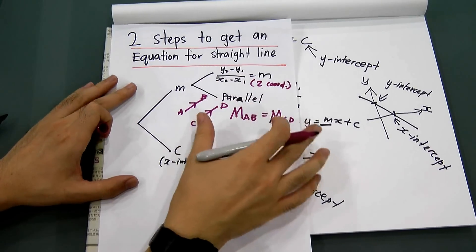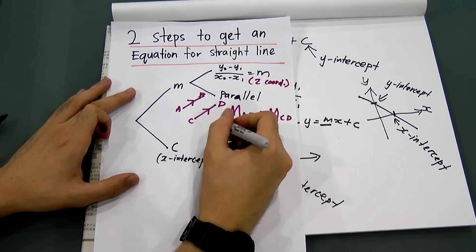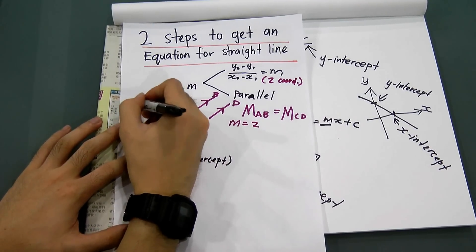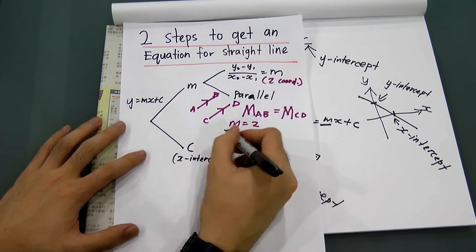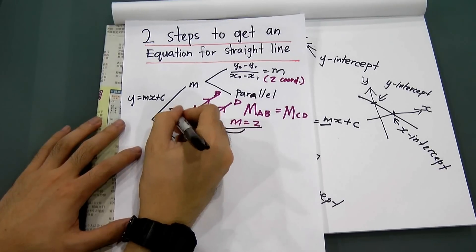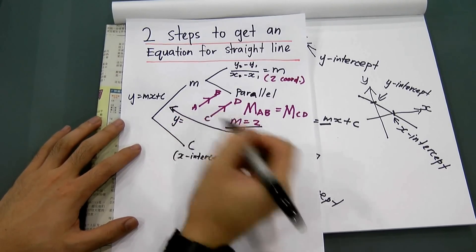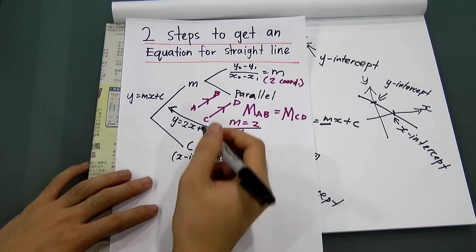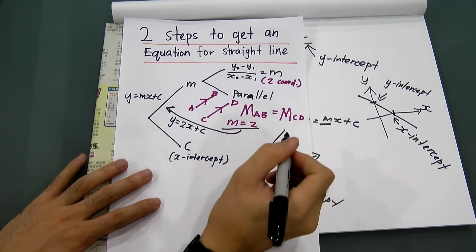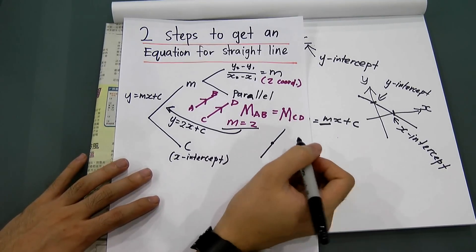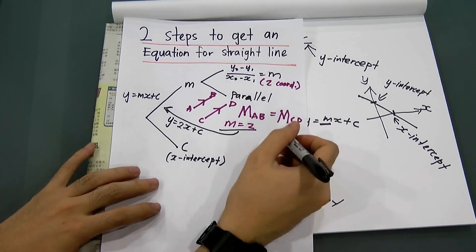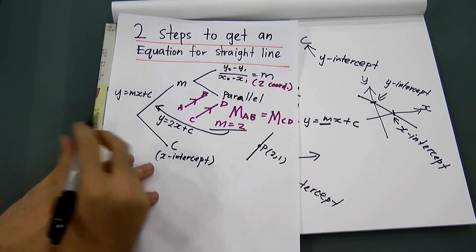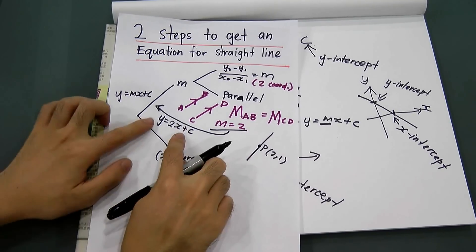After finding the gradient, let's say m equals two. You substitute it back into the equation y equal to mx plus c, giving you y equal to 2x plus c. To find c, you must have at least one coordinate that lies on the straight line. Let's say you are given point P at coordinates (2, 1).